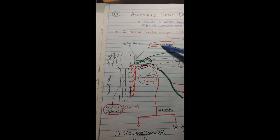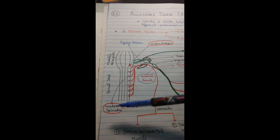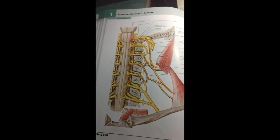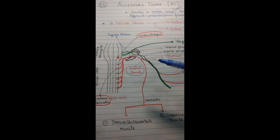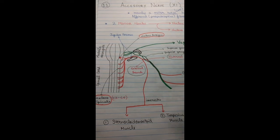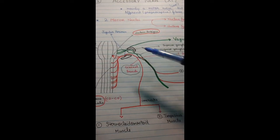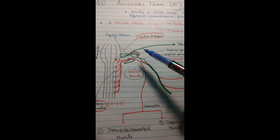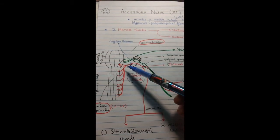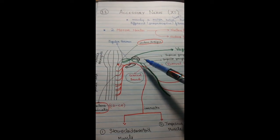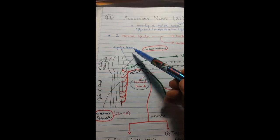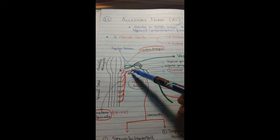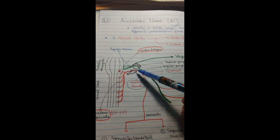The accessory nerve is formed by the two nucleus roots: nucleus ambiguus and nucleus spinalis. You can relate this diagram to the textbook page 126 accessory nerve diagram — I have drawn it simplified. Afterward, the accessory nerve will leave the cranial cavity through the jugular foramen.